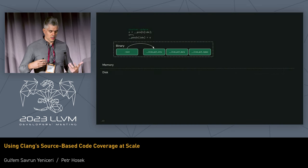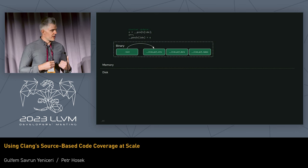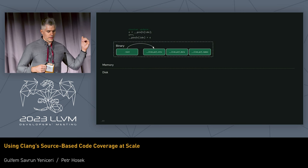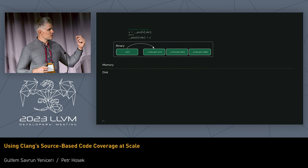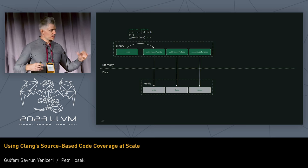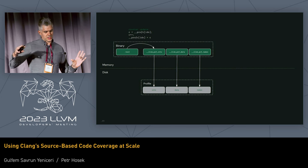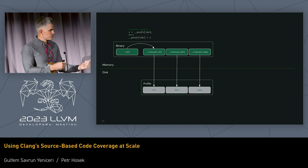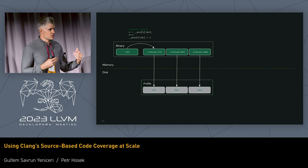The way coverage works normally is that for every basic block there is an index, and we use this index to index into the counter array. We get the counter, increment it, and write it back. When execution finishes, we take both the counters and additional metadata sections and write them into the raw profile. The problem is that if the program terminates abnormally, this write-out is never going to happen.